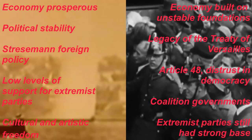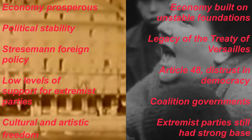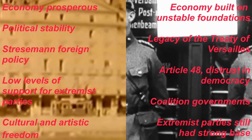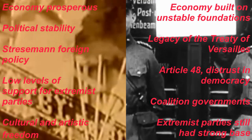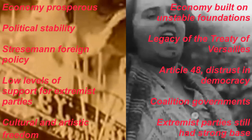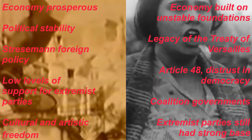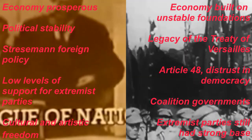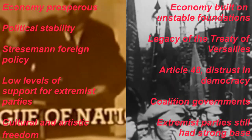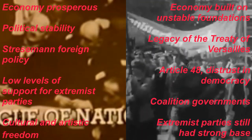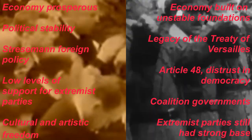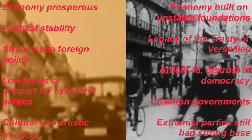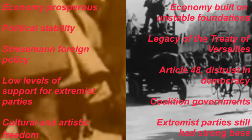On the other side of the screen, on the right-hand side, we see some of the problems. There was an economy that was built on unstable foundations — a lot of this prosperity was built on a loan from America that, if recalled, as it was in 1929, was going to cause economic problems. There was still the legacy of the Treaty of Versailles; Germany was still paying reparations. The 1929 Young Plan that renegotiated some of those reparations was opposed by the Nazis and others because they said, why are we even paying for this? We should have just destroyed the Treaty of Versailles.